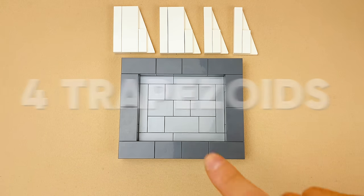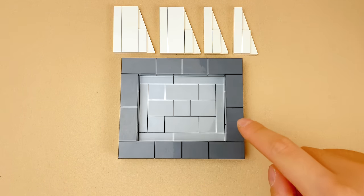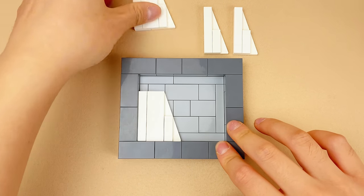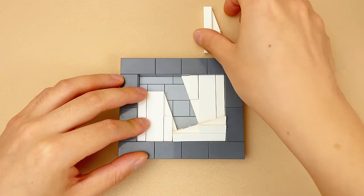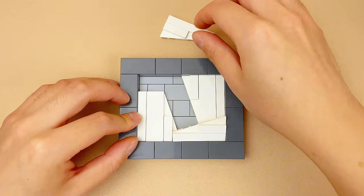The second one is to fit 4 trapezoids into the frame. First, we can try to put the rectangular sides against the wall to save some room. But clearly it doesn't work.